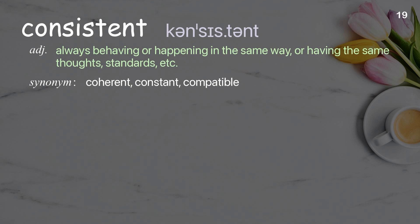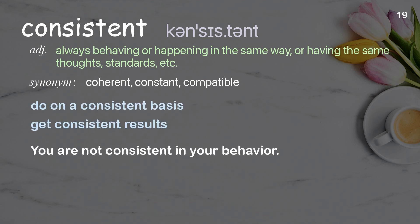Consistent: always behaving or happening in the same way, or having the same thoughts, standards, etc. Examples: do on a consistent basis, get consistent results. You are not consistent in your behavior.